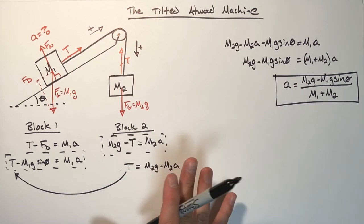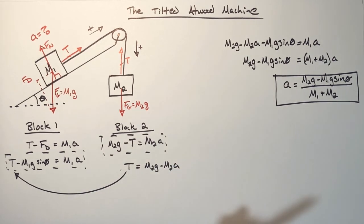So here it is, the tilted Atwood machine. If you understand this problem, you can do most versions of the Atwood machine until we start throwing friction and pulley mass into the situation. That's all for now.